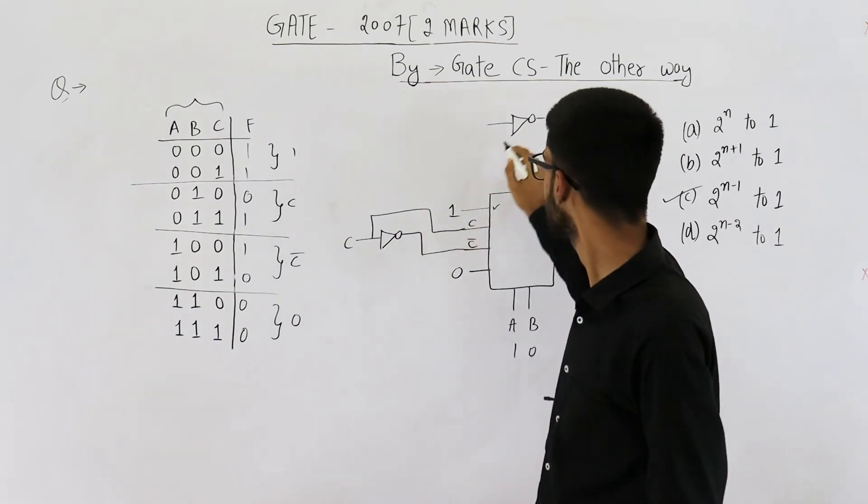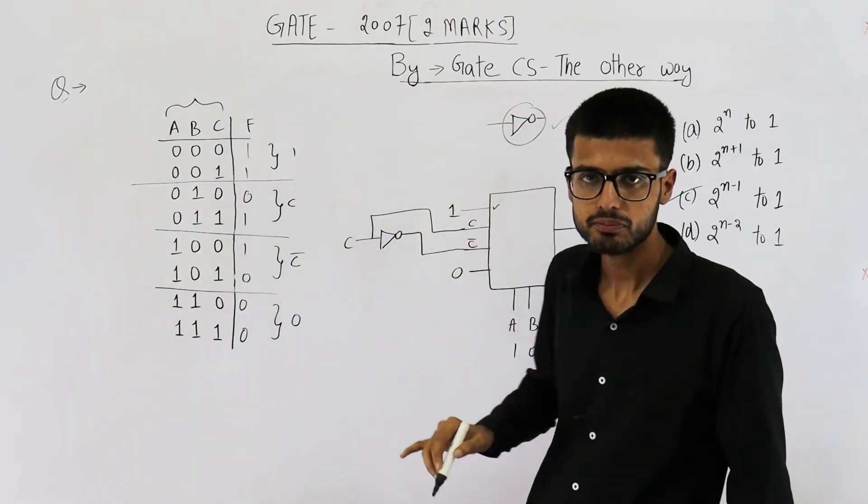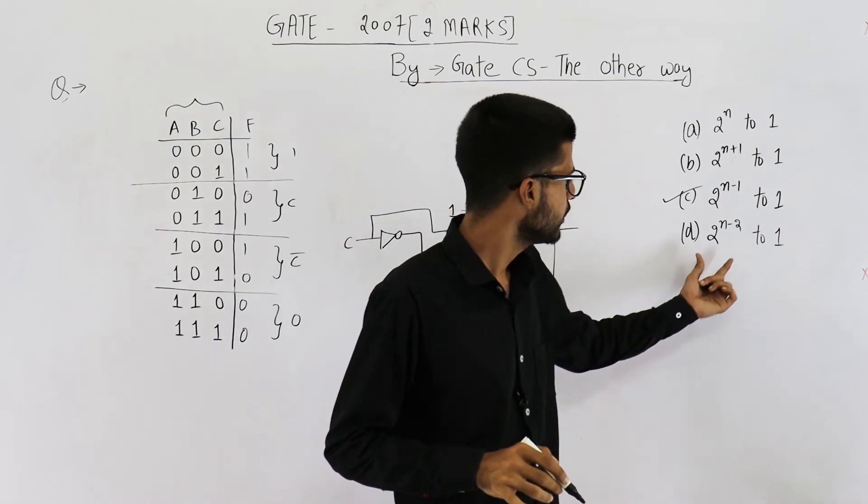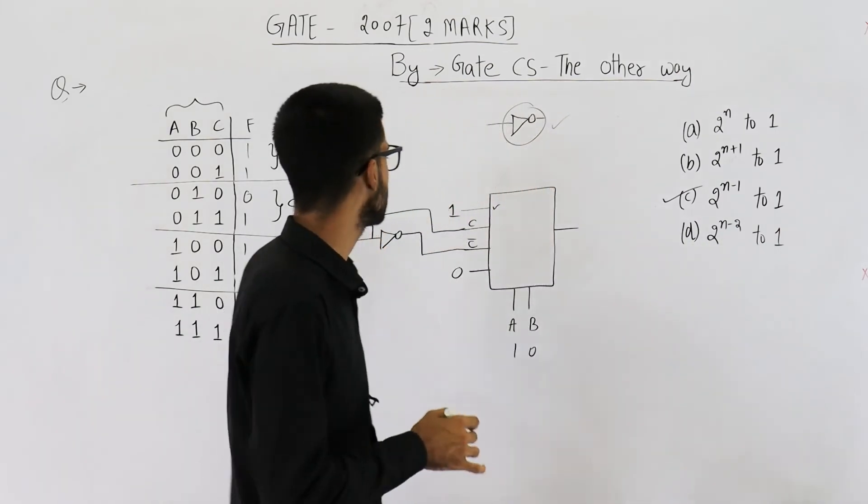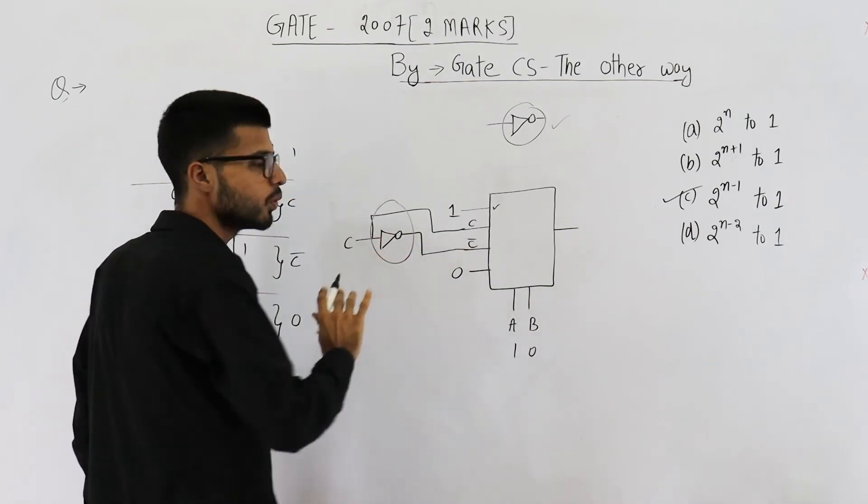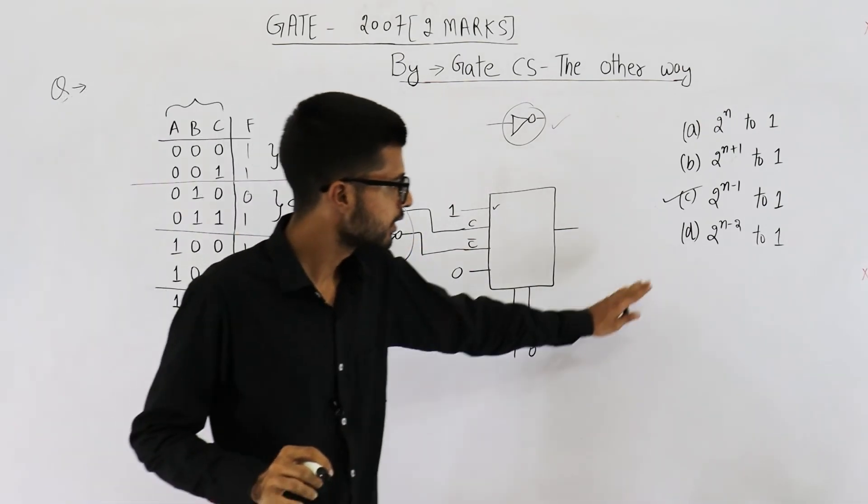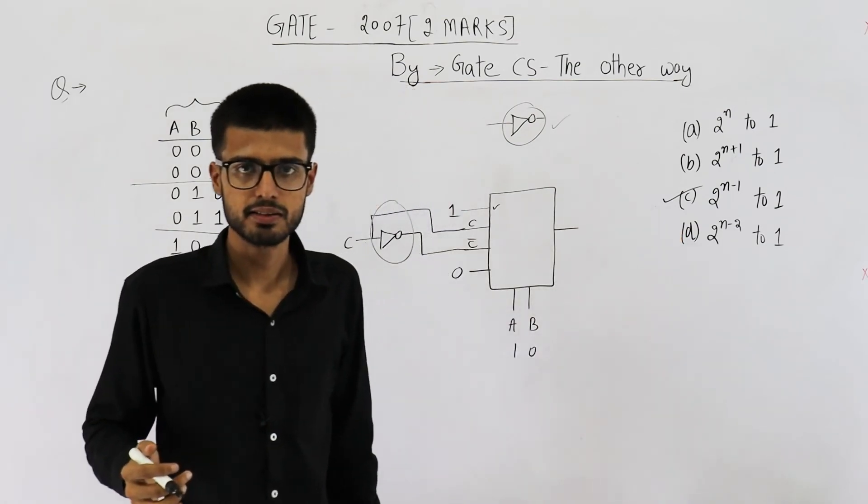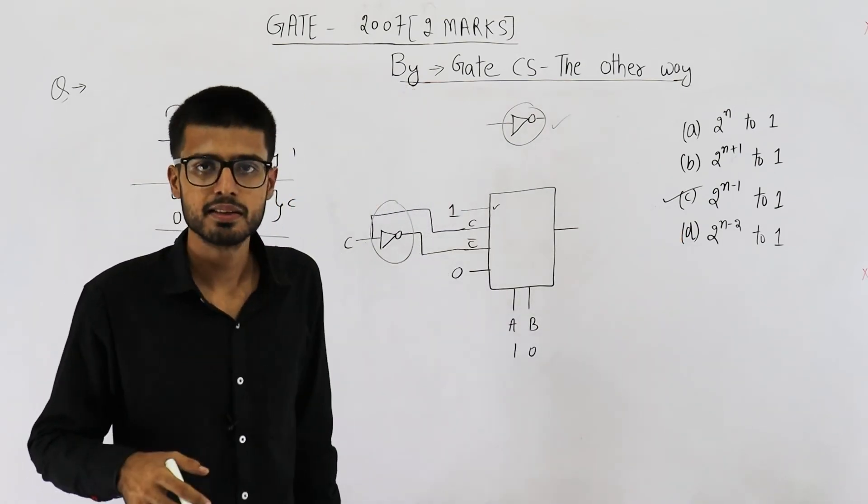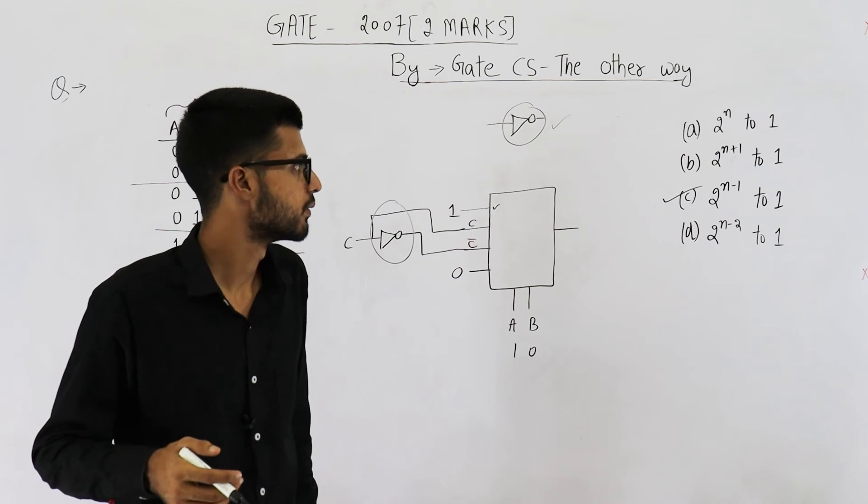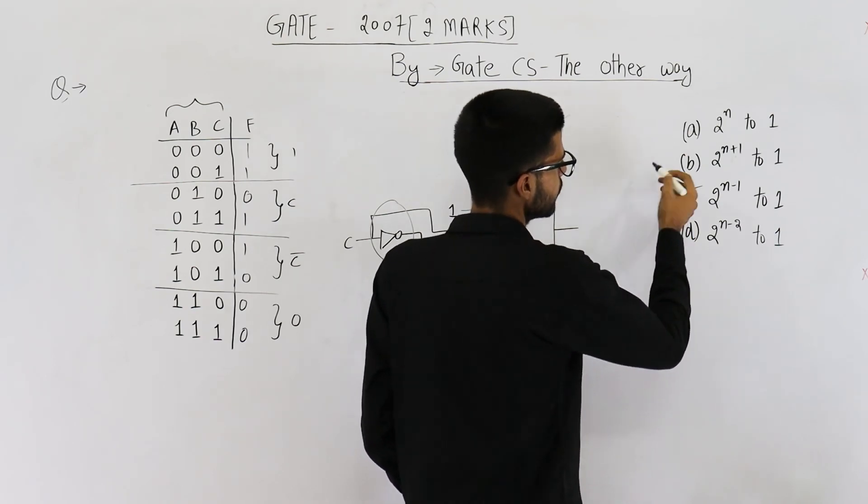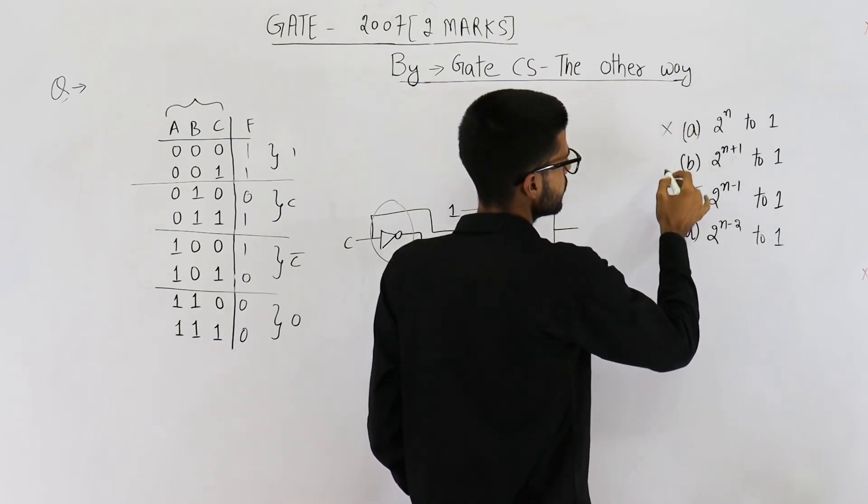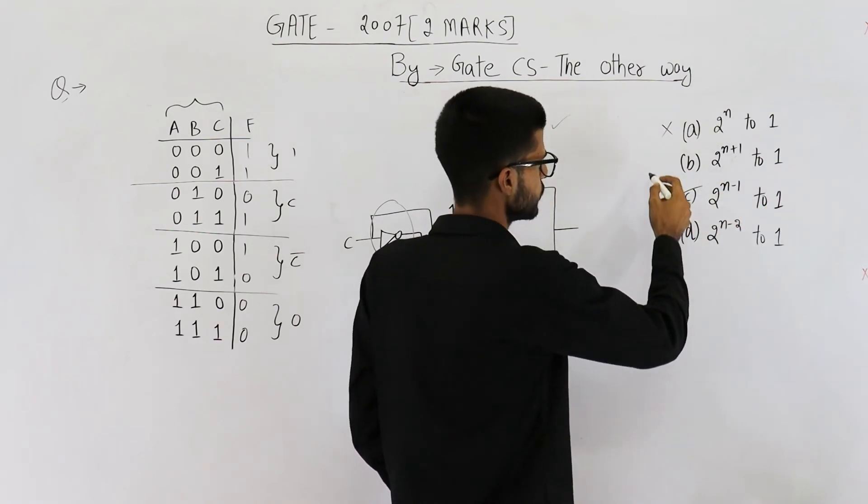But in this case inverter is needed. Now you can even go with two raised to the power n minus two multiplexer. But then you will need additional gates. Only not gate won't do the job. This option d could have been our answer. If additional gates like and gate and or gate were available. But they haven't mentioned anything about and gates and or gates. So this is rejected. And this one is also rejected. This is just to confuse you.